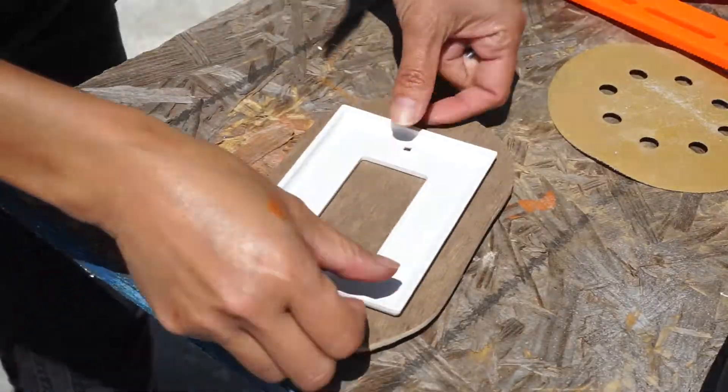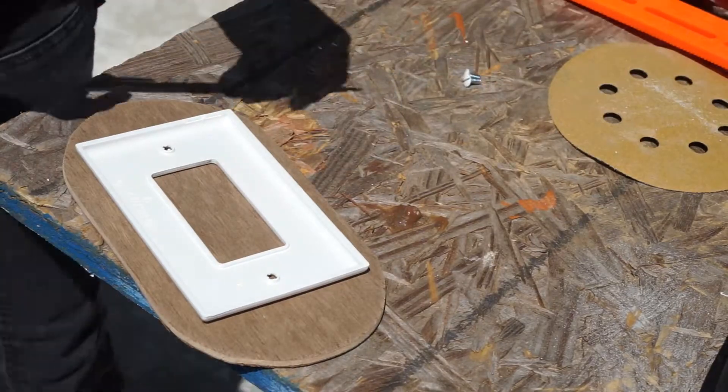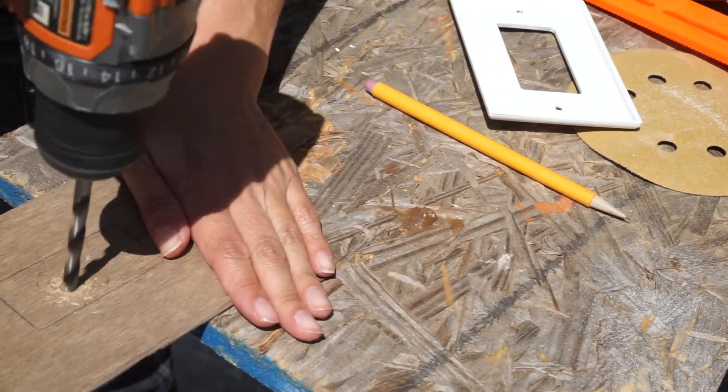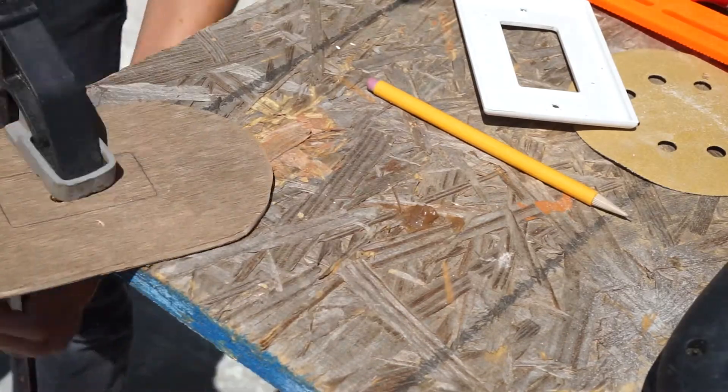Sanding everything down and then cutting out the inside. If you're going to do this, do the inside first and then the outside because you have so much more material to work with.